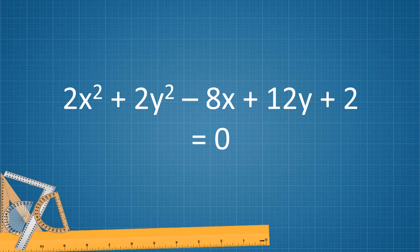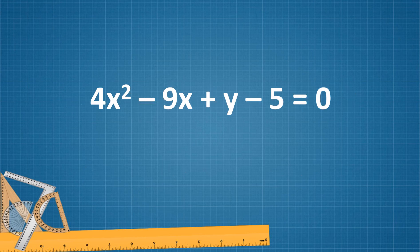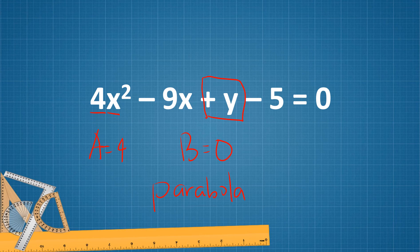For this example, A equals 2 and B equals 2. Since A equals B, this is a circle, and there is no orientation involved. For the next example, A equals 4 and B equals 0 because there is no term with y squared. Since B equals 0, it is a parabola. Since the variable with the square is x, we look at y. Since it is positive y and transposing it to the other side makes it negative, the parabola opens downward.